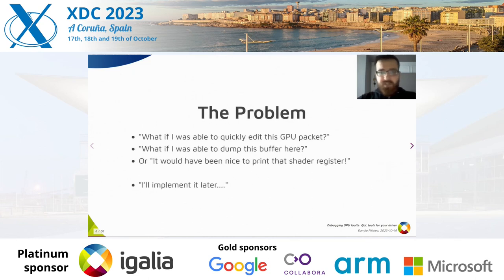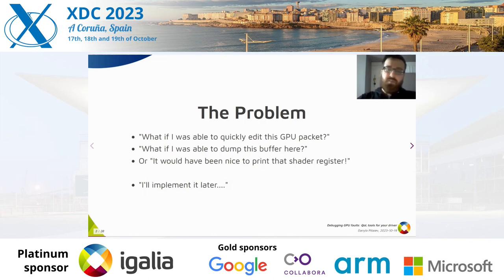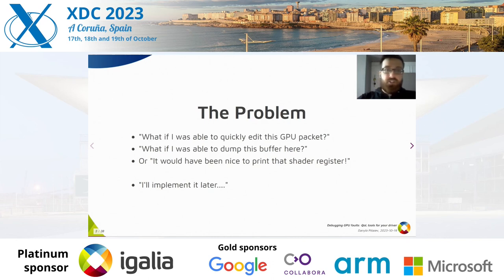Let's start by stating the problem. After you debug a nasty GPU issue, half of the time you think: what if I was able to quickly edit the GPU packet, or what if I was able to dump this buffer's memory here, or it would have been nice to print that shader register. And every time you think, I will implement it later — and then forget about it until the next nasty bug. Last time though, it was not just a bug but a new generation of GPUs needed to be supported. There is no documentation for Adreno GPUs and all the information is reverse engineered, so there is a lot of 'what does this bit do' kind of testing. This finally tipped the scales and the tooling was implemented, though afterwards I believe it is worthy regardless of having GPU documentation.